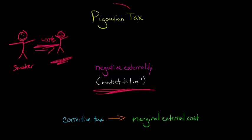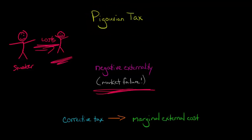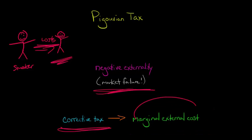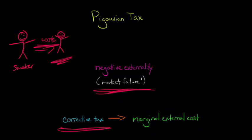A Pigouvian tax is a corrective tax that is set equal to the marginal external cost. The marginal external cost — all it means is the cost to people other than the smoker.